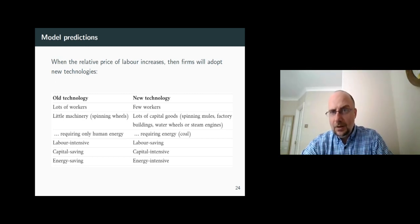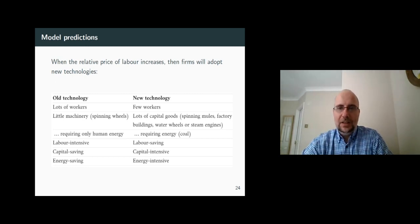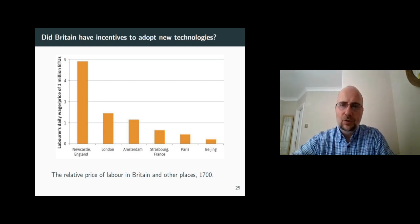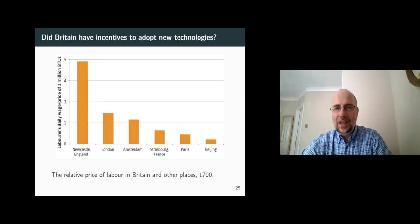But this is great. We now have the full picture to explain what was going on in the beginning of the Industrial Revolution. What I'm showing you here are the labor costs in Newcastle, London, and other places across the globe at the turn of the 18th century. Look how expensive labor was in England and how cheap it was in other places. So, British firms had the incentives to switch and to invest in technologies which save labor and use a lot of capital and energy.